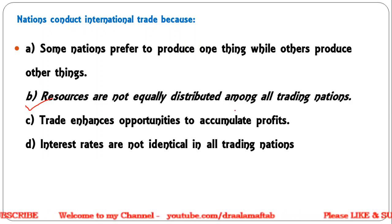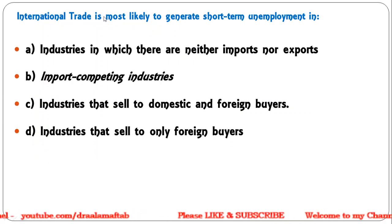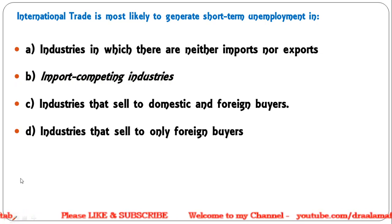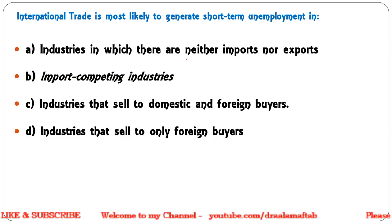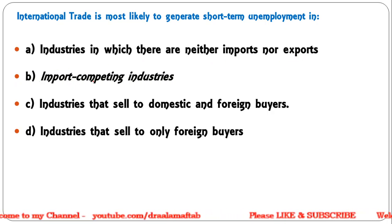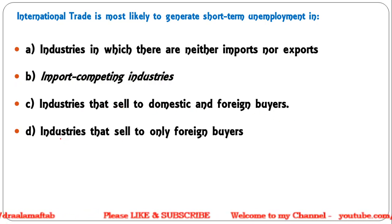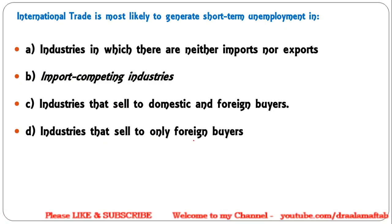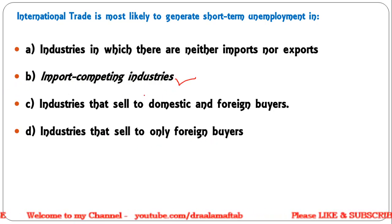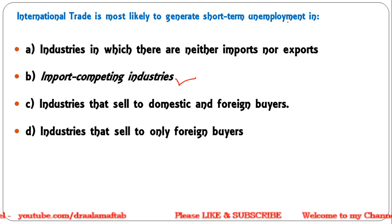Second question: International trade is most likely to generate short-term unemployment in industries — in which there are neither imports nor exports; import competing industries; industries that sell to domestic and foreign buyers; industries that sell to only foreign buyers. The correct answer is import competing industries, as they will be competing with foreign goods.